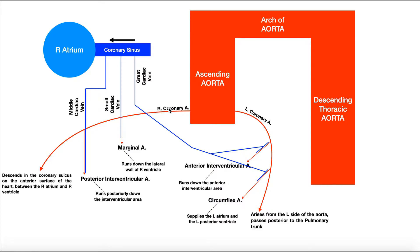Now for the right coronary artery — this is going to supply the right side of the heart. The first branch it gives off is the right marginal artery, sometimes just termed the marginal artery. It's important to realize there's both a left and a right marginal artery, so this one is the right marginal artery because it comes off the right coronary artery. This is a pretty small artery and easy to miss on a model, but it runs down the lateral wall of the right ventricle and is responsible for supplying the right ventricle with blood.